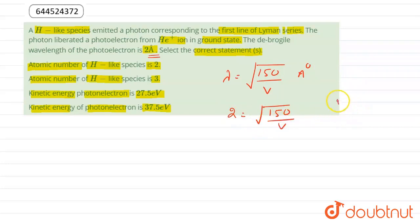The value of V comes out to be 37.5 volt, so kinetic energy of photoelectron would be 37.5 electron volt.